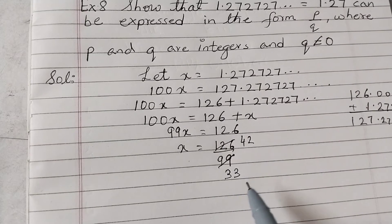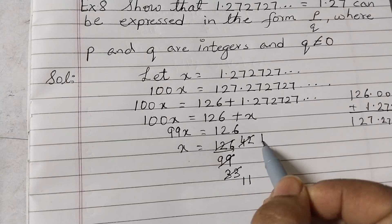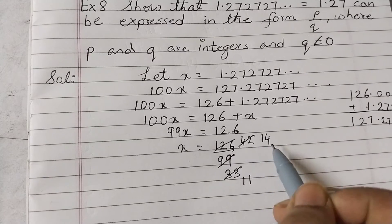If you see, this is divisible by 3 again. 3 times 14 is 42, 3 times 11 is 33, so this is equal to 14 over 11.